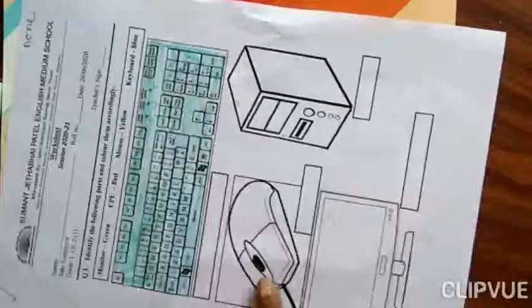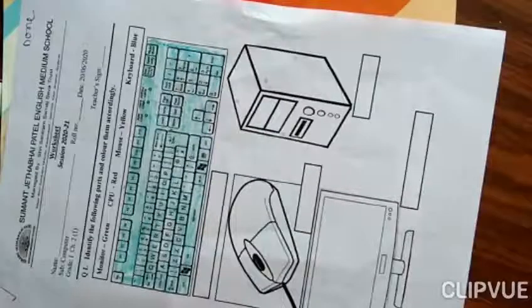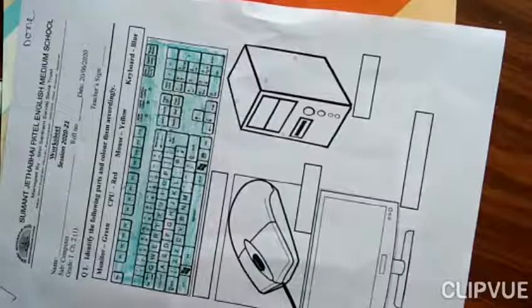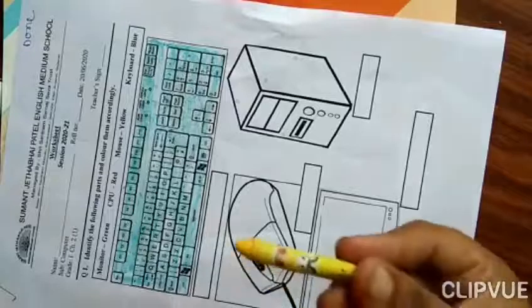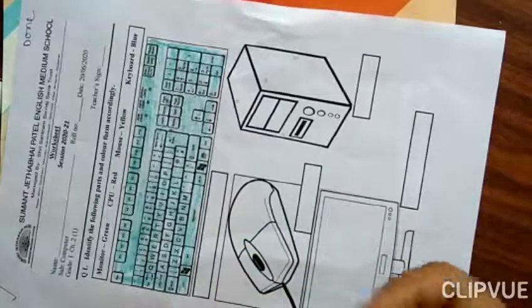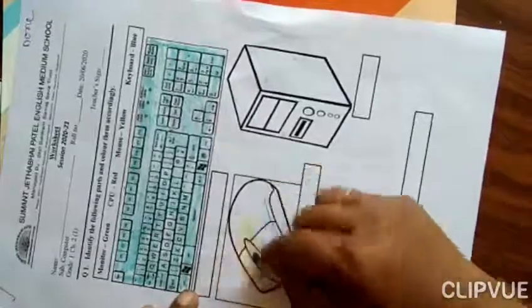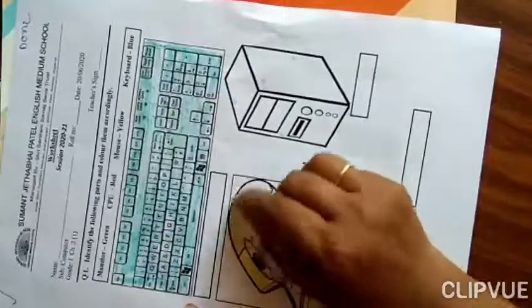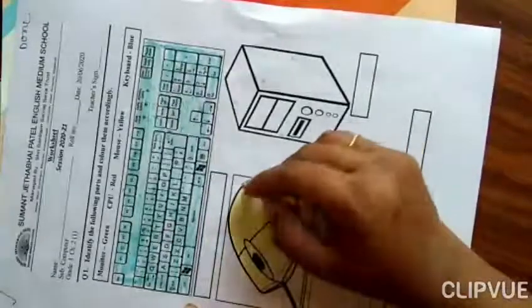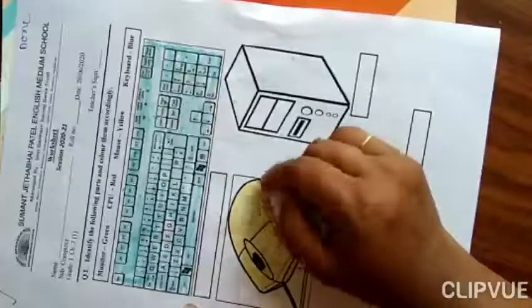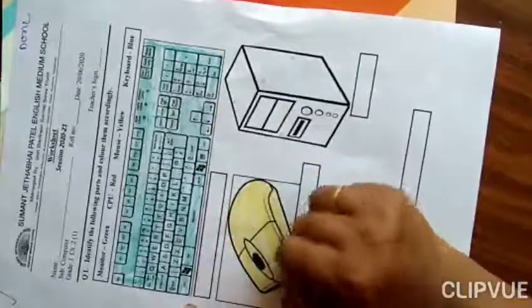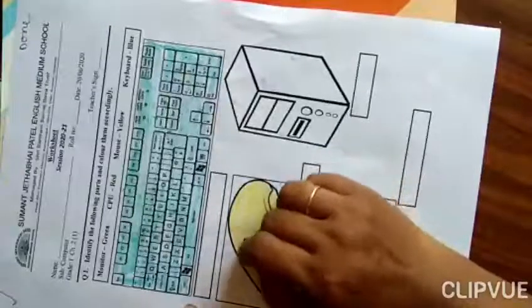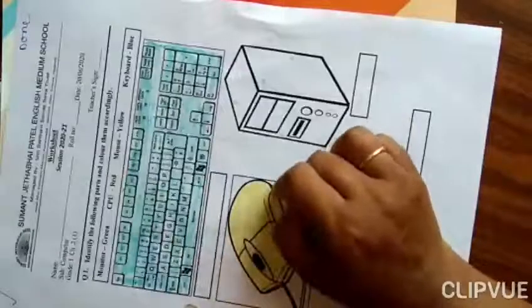Which is this picture? This is a mouse. And mouse we are going to color with yellow color. So I have taken a yellow color. Let's color a mouse. Yes, it's complete.